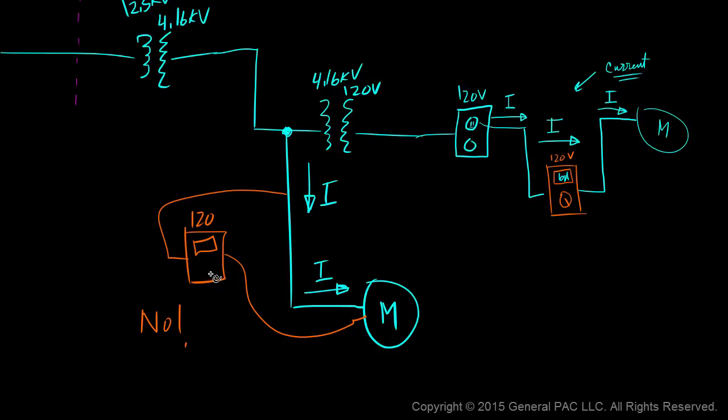And the reason why we can't is very simple. This multimeter here, it's only rated for 120 volts. And the voltage that's hooked up to this motor here is at 4.16 kV. So if we try to do that, it'd blow up. So how would we accomplish this particular task? And this is where a current transformer comes into play.